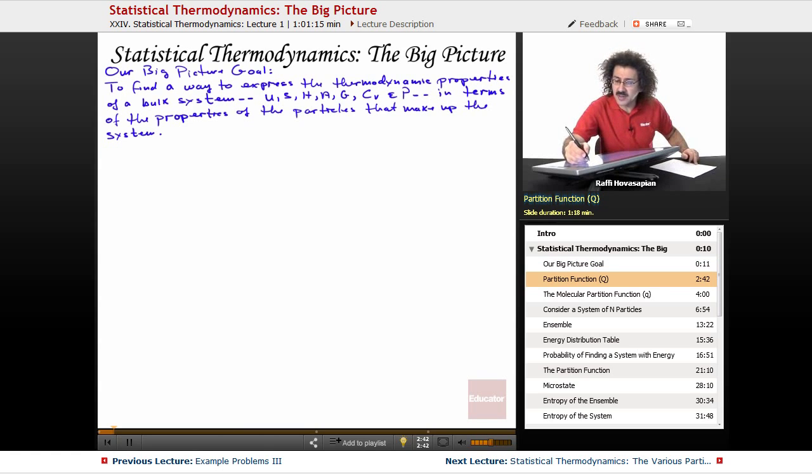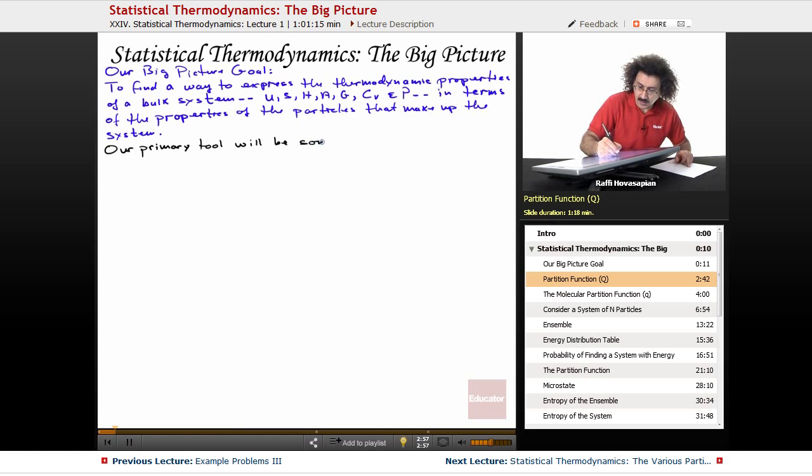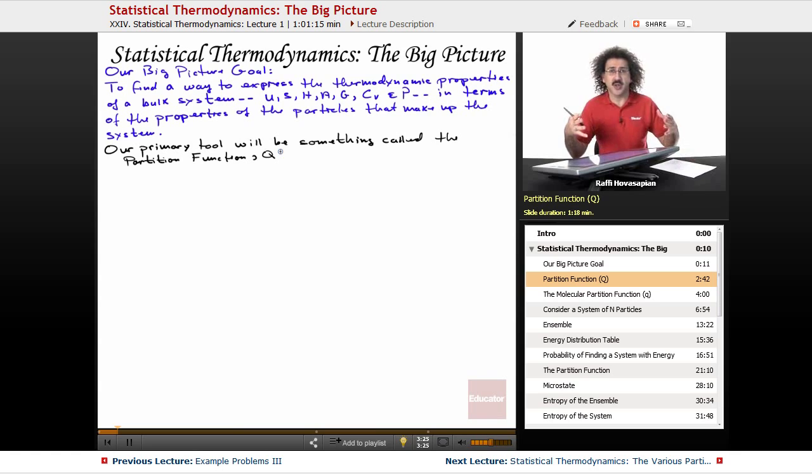So our primary tool in this investigation is going to be something called the partition function. And the symbol for the partition function is going to be a capital Q. It's going to be the partition function of the system.